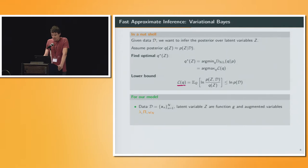In our case, the data is our observations on our space, and the latent variable z are the function g and the augmented variables lambda, pi, and omega. What we do here is we assume a structured mean field approach, where we assume that the augmented Poisson process and the Polya-Gamma variables are independent of the latent function g and the lambda.